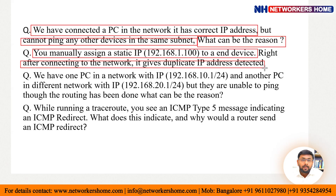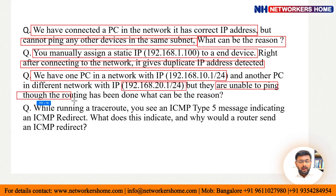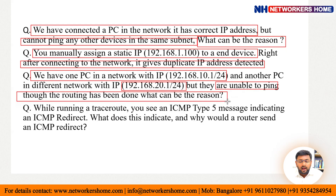We will discuss what is going to help us get these messages and how we can solve this. Next: we have one PC in the network with IP 192.168.10.1/24 and another PC in a different network with 192.168.20.1/24, but they are unable to ping even though routing has been done. What can be the reason? Though the routing has been done, it is still unable to ping — what could be the possible reasons?